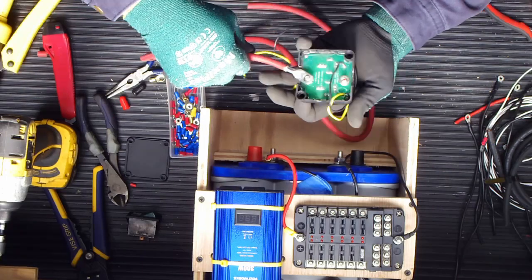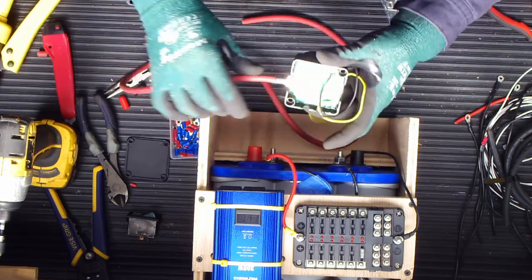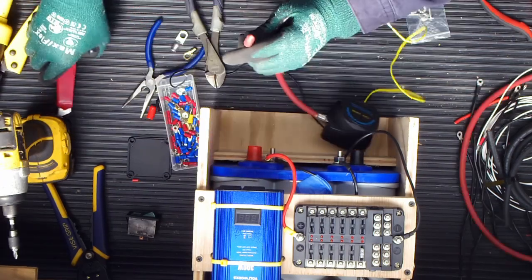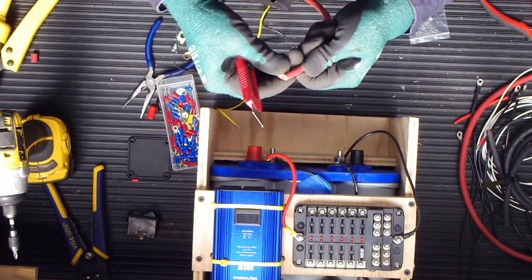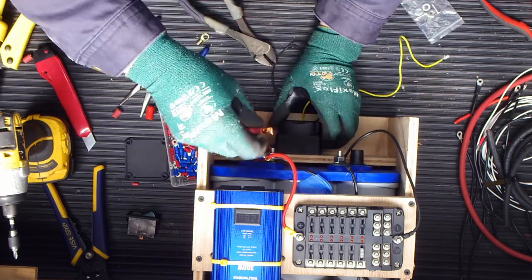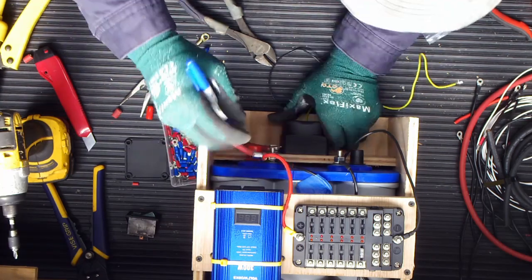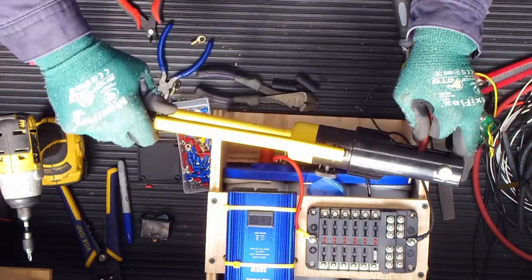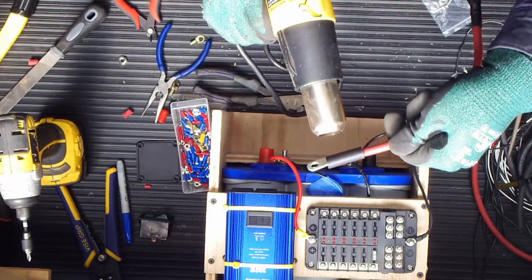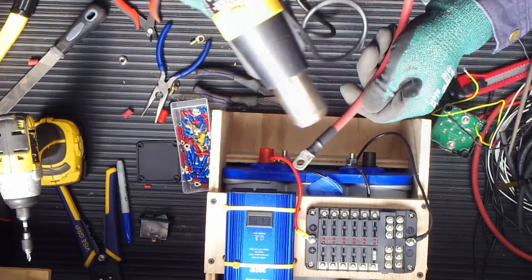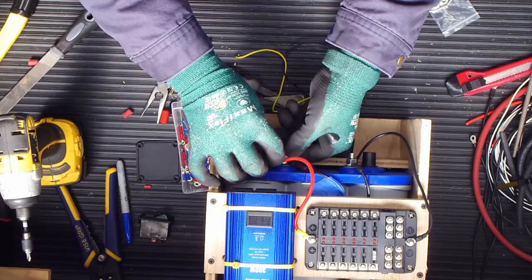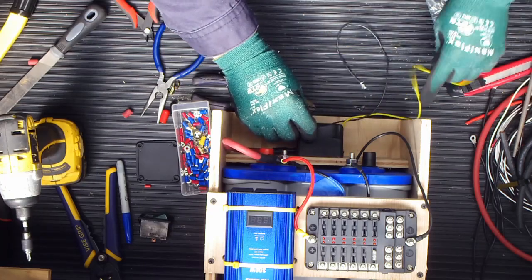Make a cable to run from the battery down to the relay. When making cables for tight spaces, make sure to clock your terminals. Run the smart relay ground wire up to the fuse block.